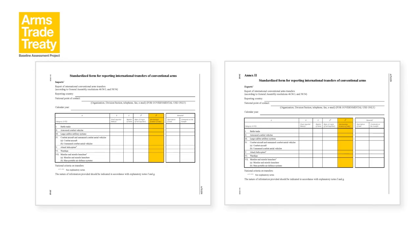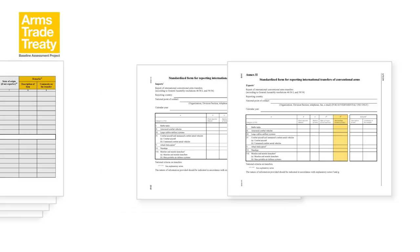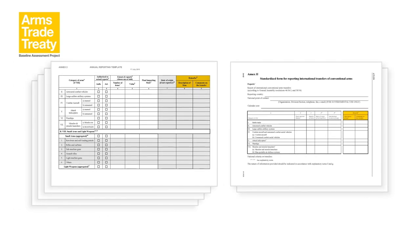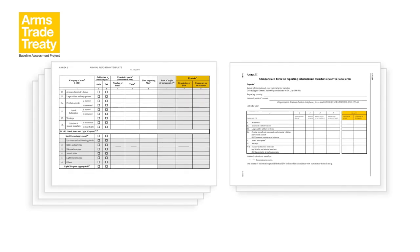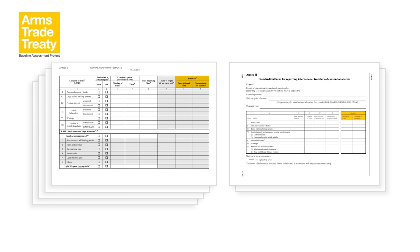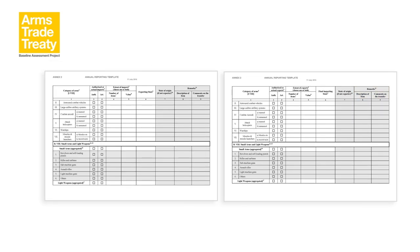The ATT annual report template omits the column in the UN Register reporting template for intermediate location, if any. This column is used in the UN Register reporting template for cases where an item is integrated into a system and re-exported. The ATT annual report template has shaded columns for remarks to indicate that such information is voluntary. The ATT annual report template has subheadings for the categories of combat aircraft and attack helicopters, enabling states' parties to report separately on imports or exports of manned or unmanned aerial vehicles in these categories. The 2016 group of governmental experts on the UN Register has recommended only the creation of two subcategories for combat aircraft and unmanned combat aerial vehicles.